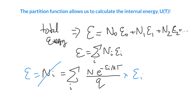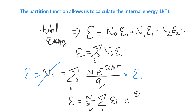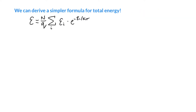Plugging that into our equation for total energy, we can rewrite it. The total energy equals N over q times the sum of the energy of each state times e to the minus energy over kT. This is useful because if we know the energies of individual states — either from quantum mechanics or from spectroscopy — we can calculate the total energy of the molecule as a function of temperature. Both q and T in this expression depend on temperature.